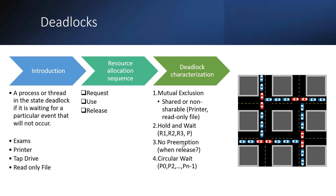Hold and Wait: the process has three resources required. For execution of a particular task, one resource is required from the start, and after ten seconds another resource is needed. The process holds resources already allocated and waits for additional resources to complete execution.